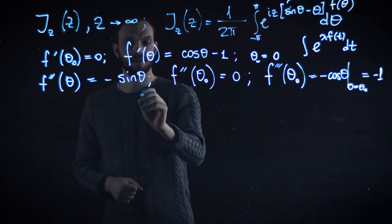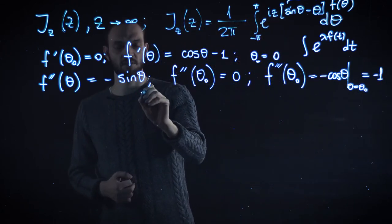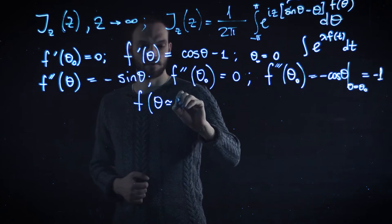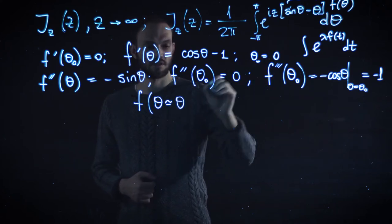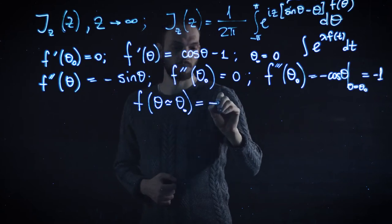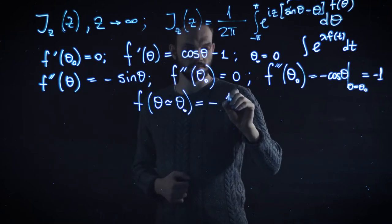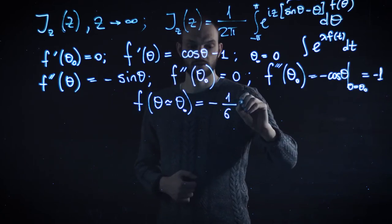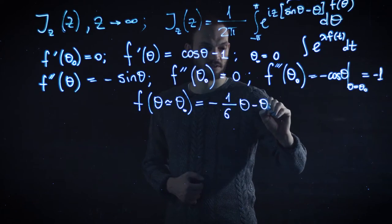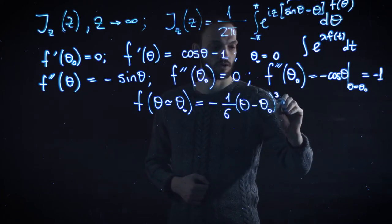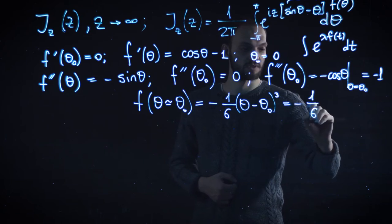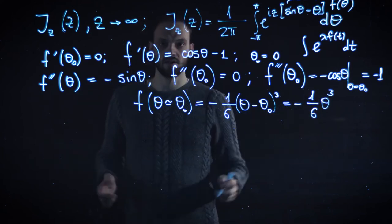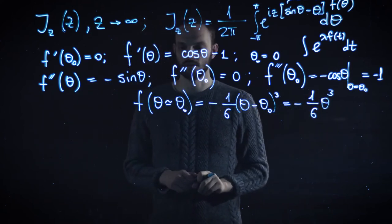As an intermediate result, in the vicinity of θ₀ = 0, f(θ) equals minus 1 over 6 — that is, the third derivative divided by 3 factorial — multiplied by (θ - θ₀)³. In this case, since θ₀ = 0, this simplifies to minus θ³/6. This is what makes this situation peculiar.